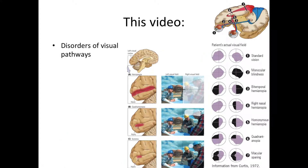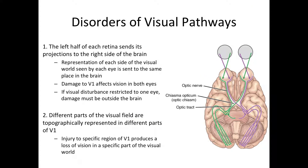In this video we are going to talk about the disorders of the visual pathways. In the picture you can see all these different lesions and what they would do to your visual field. This is your right eye, this is your left eye, this is your left visual field, this is your right visual field. We're also going to talk about scotomas at the end.